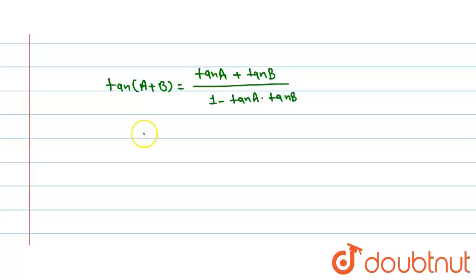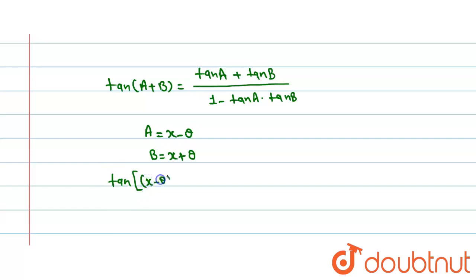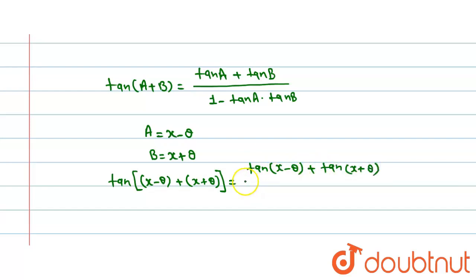Now, if we put a = x − θ and b = x + θ, we get tan((x − θ) + (x + θ)) is equal to tan(x − θ) + tan(x + θ) upon 1 minus tan(x − θ) into tan(x + θ).